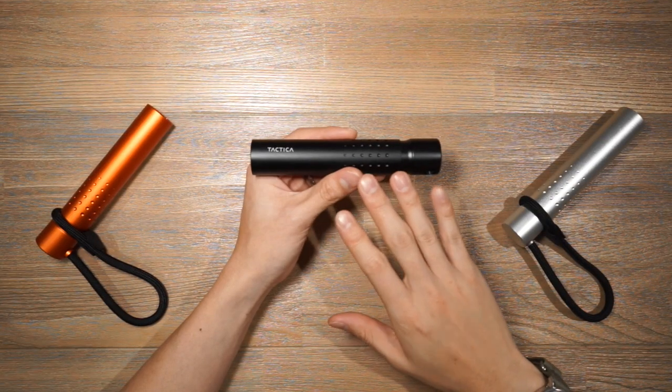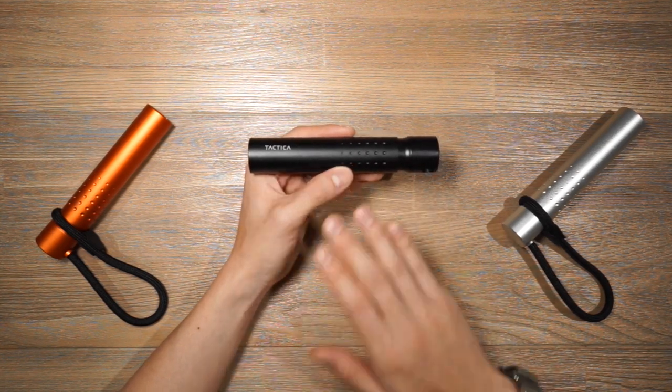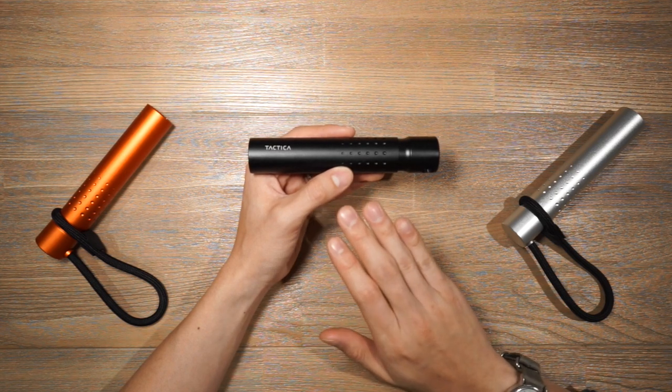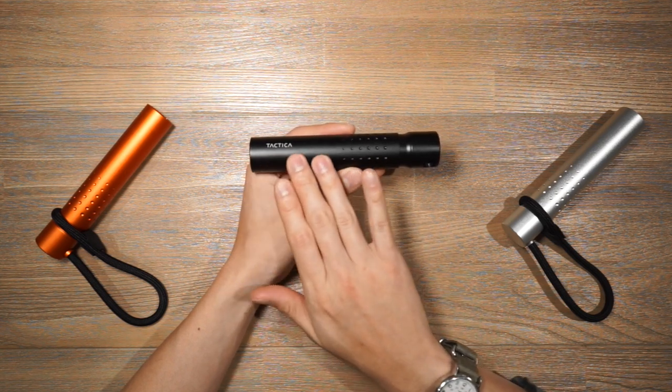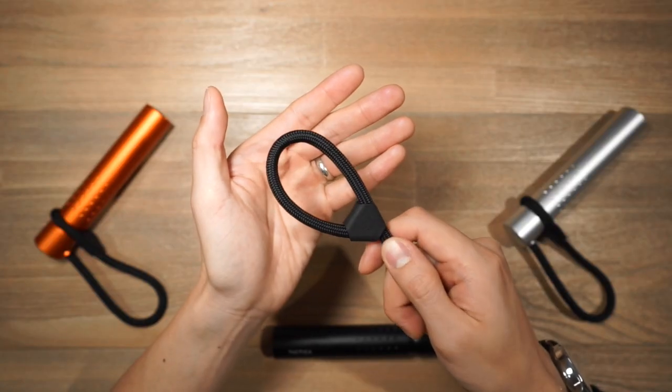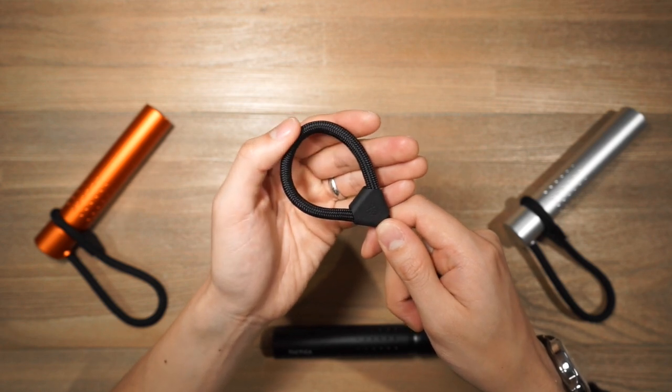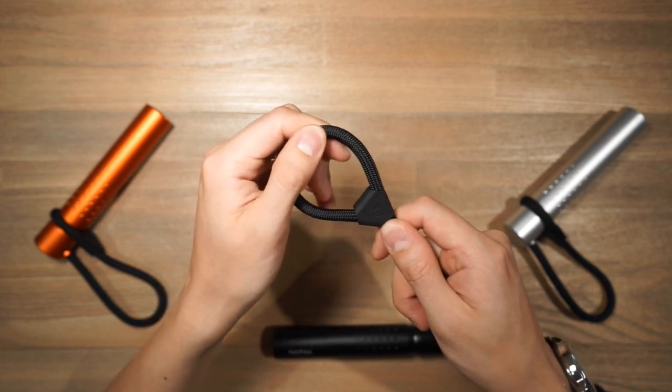Okay so taking a look deeper, let's start off with some materials of the Tactica F100 flashlight. The exterior is a CNC machined aluminum and it also has a hard anodized finish on the outside. The paracord lanyard that comes with the flashlight is a quarter inch type 3 500 paracord so it's a really heavy-duty paracord.